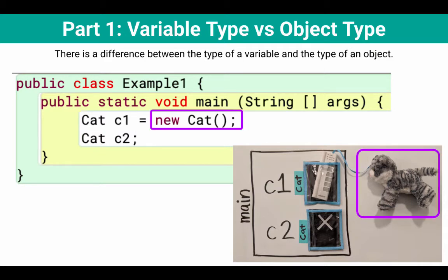On the right hand side, that calls the cat constructor. So I call new cat, and that makes an actual cat object for us.